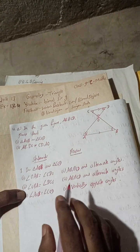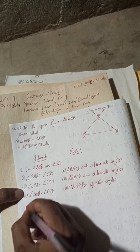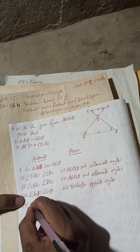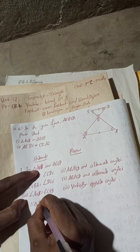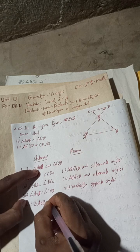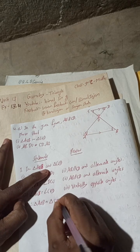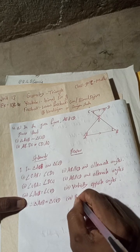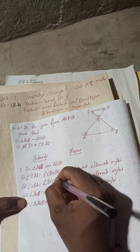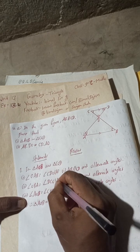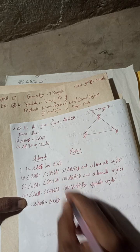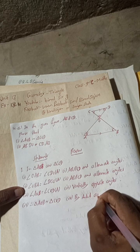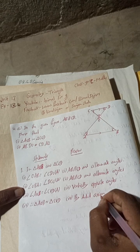Therefore, triangle AOB is similar to triangle COD by AAA — angle-angle-angle criterion. All three angles correspond, so the triangles are proved similar.